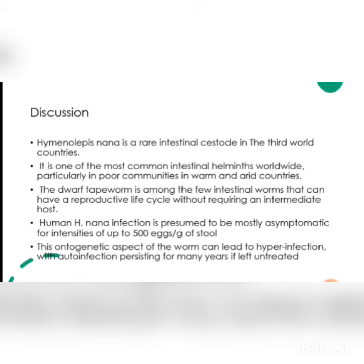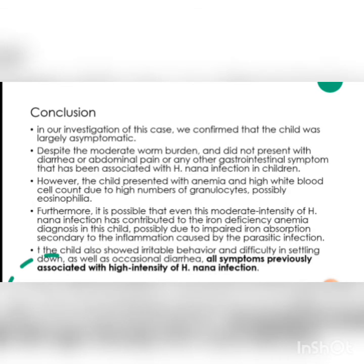Hymenolepis nana is a rare intestinal cestode but is most common in warm, arid countries such as those in Africa. A key fact about H. nana infection is that it is most commonly asymptomatic, yet it can be so intense that it can produce up to 500 eggs per gram of stool. Diagnosis is confirmed by an increased number of granulocytes and elevated white blood cell counts.